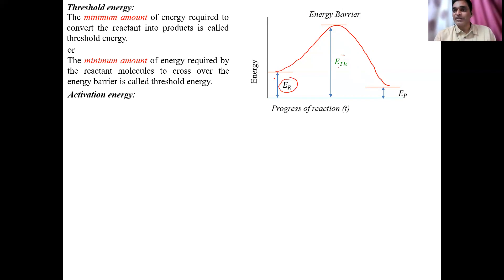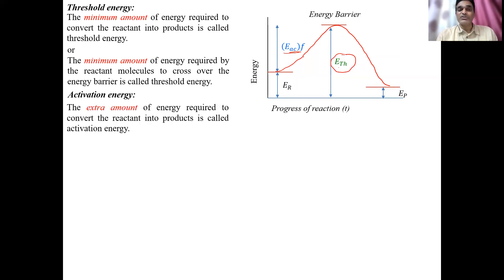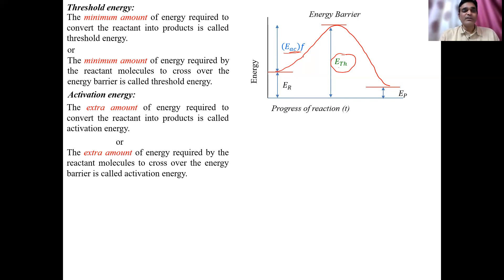That minimum energy to cross the barrier is called the activation energy. For the forward conversion — that is, converting reactants into products — some extra amount of energy is required beyond the energy of the reactants. That extra amount of energy required to convert the reactant into product, to cross this energy barrier, is called the activation energy.